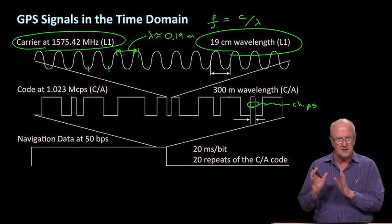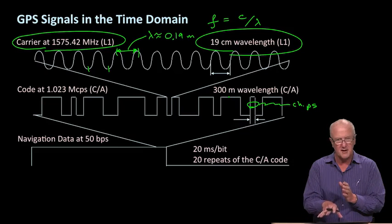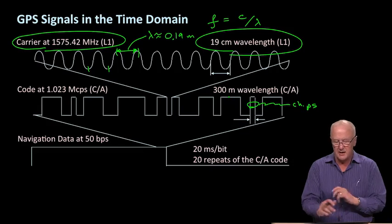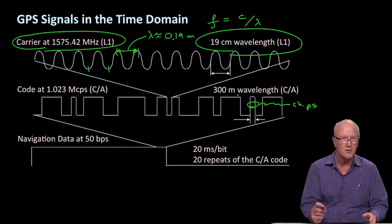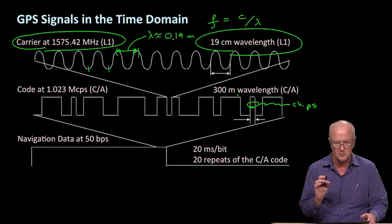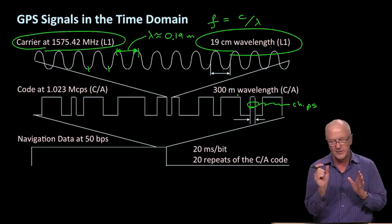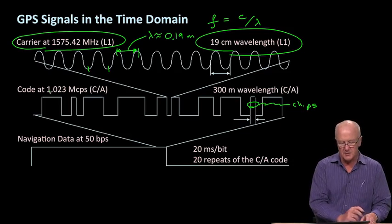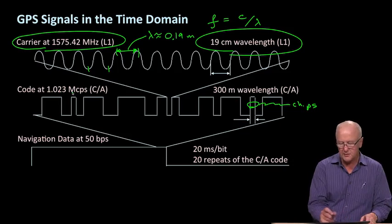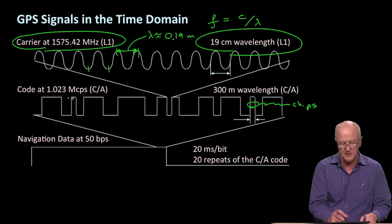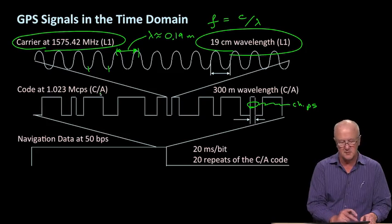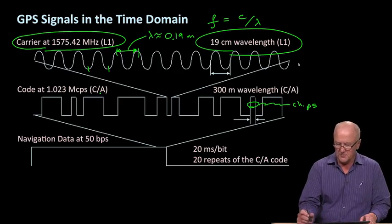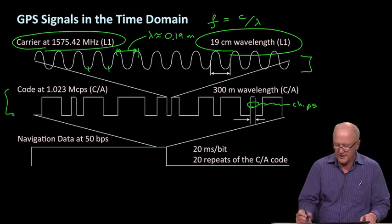We really want these chips to be short. By the way, when you look at the military codes from GPS or the new civilian codes coming at L5, these chips rather than being 300 meters long are only 30 meters long. That just pushes in that direction of greater resolution. At the same time, the code has a frequency as well. There are 1.023 million chips, each of length 300 meters, being clocked out per second for the so-called CA code, the coarse acquisition or clear access code.